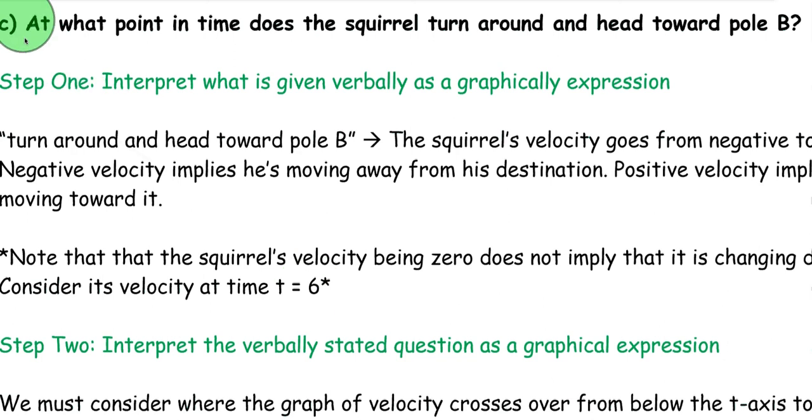Part C of the linear motion of a squirrel. At what point in time does the squirrel turn around and head toward pole B? Let's underline some key words here. Point in time, so our answer is going to be T equals something. Does the squirrel turn around?